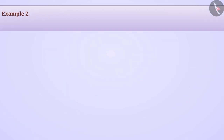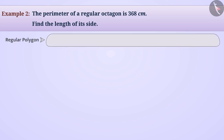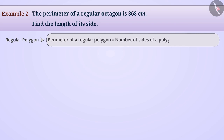Next example: the perimeter of a regular octagon is 368 centimetres. Find the length of its side. We know that for a regular polygon, the perimeter is equal to the number of sides multiplied by the length of one side.